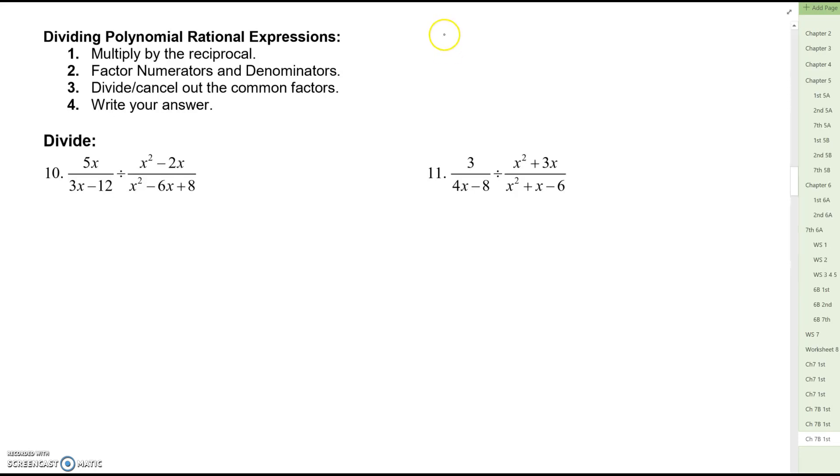Some of you have probably heard of KFC or some of your teachers taught you KCF for like Kansas City football. Basically this means keep the first fraction the same, flip the second fraction, and change the sign to multiply. So we don't divide fractions. Instead we multiply by the reciprocal.